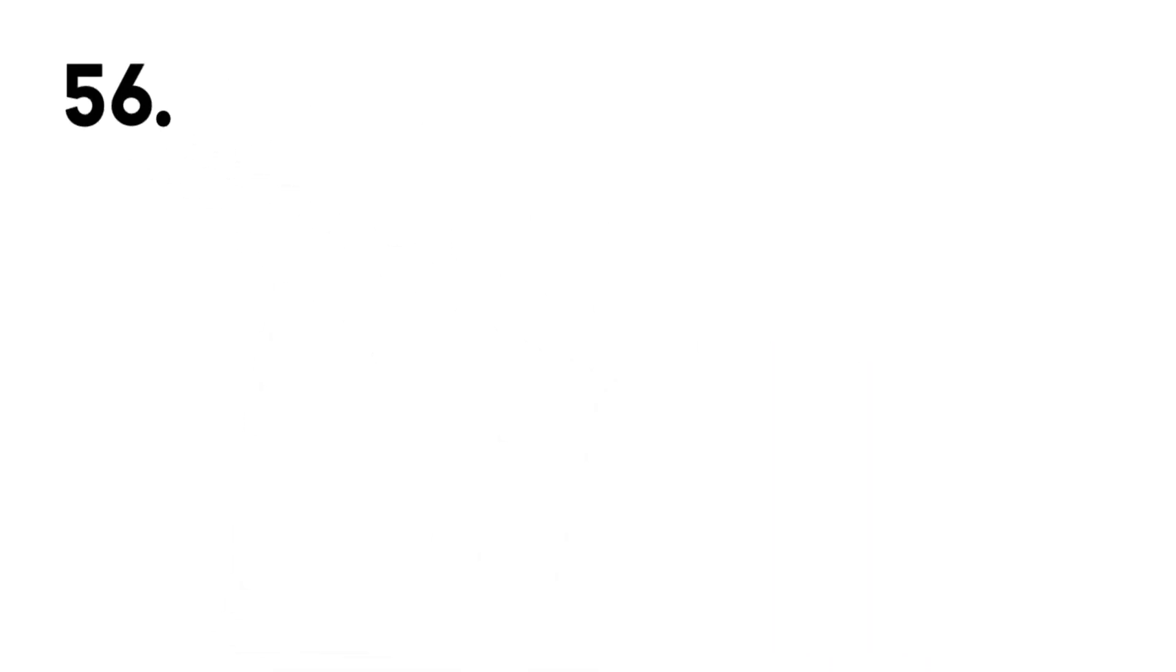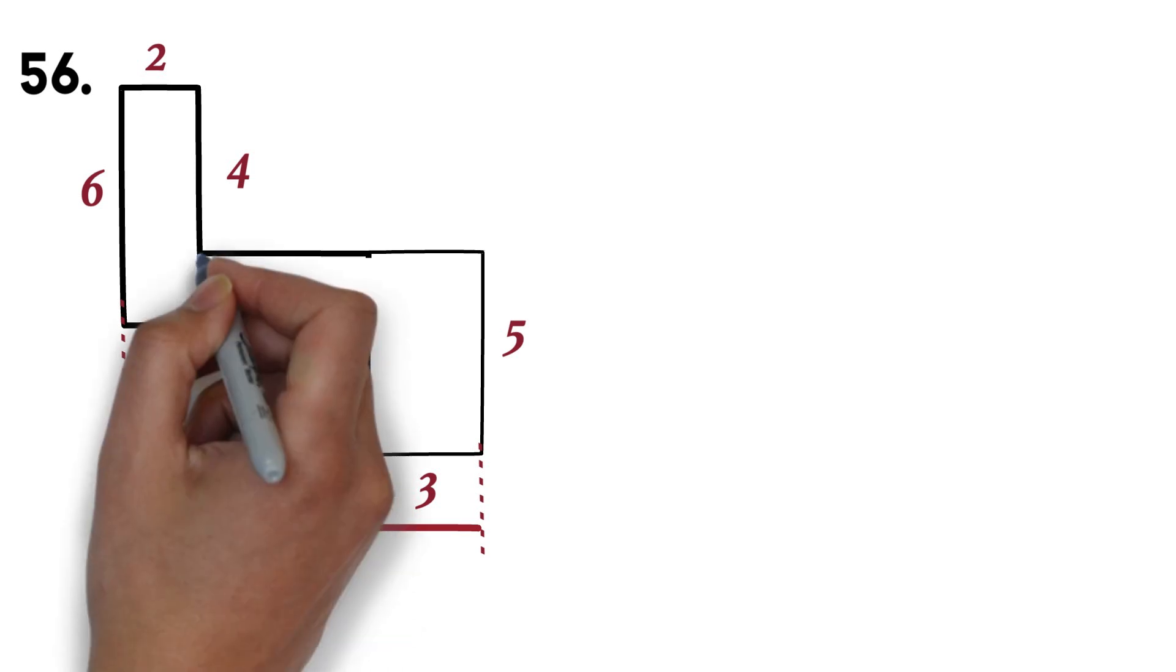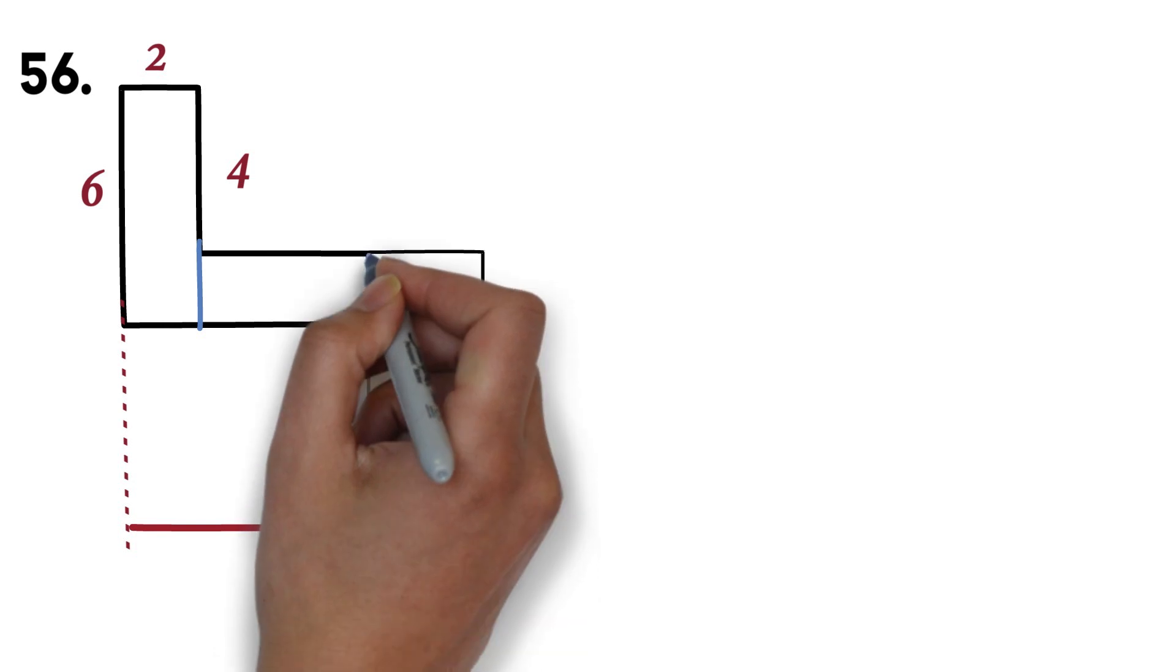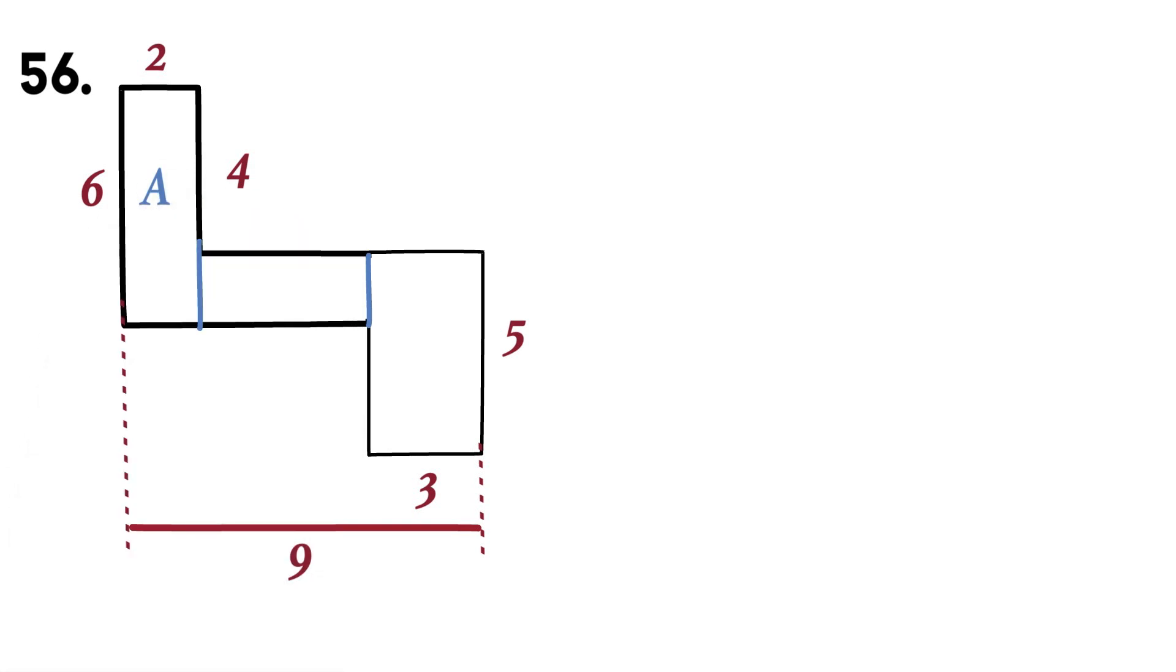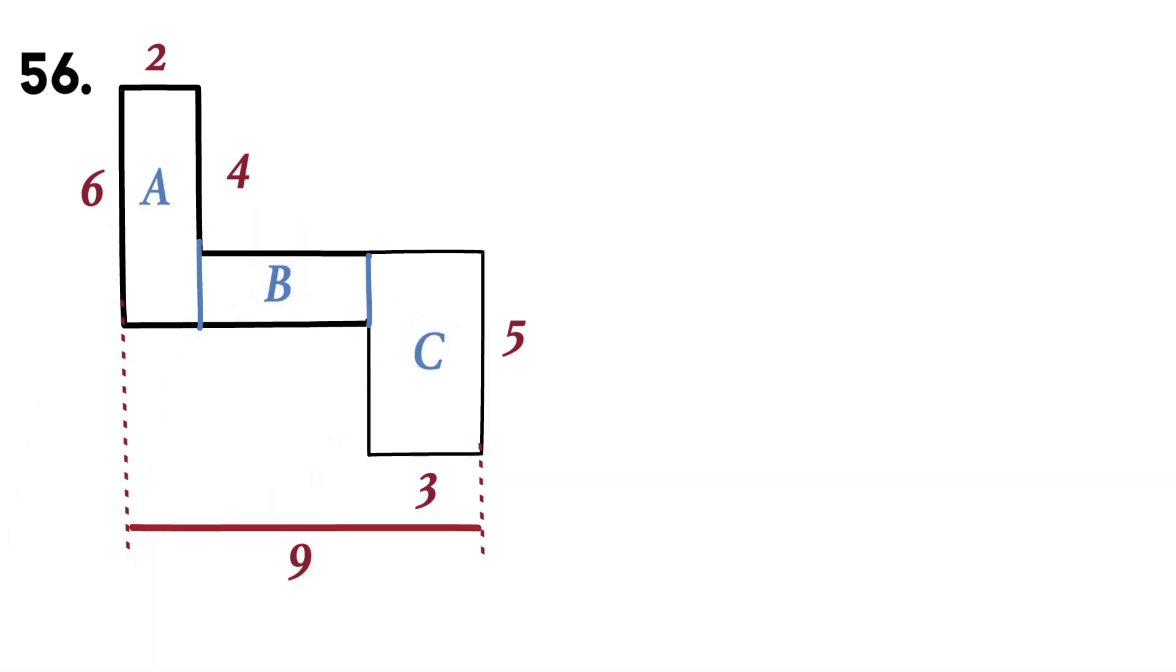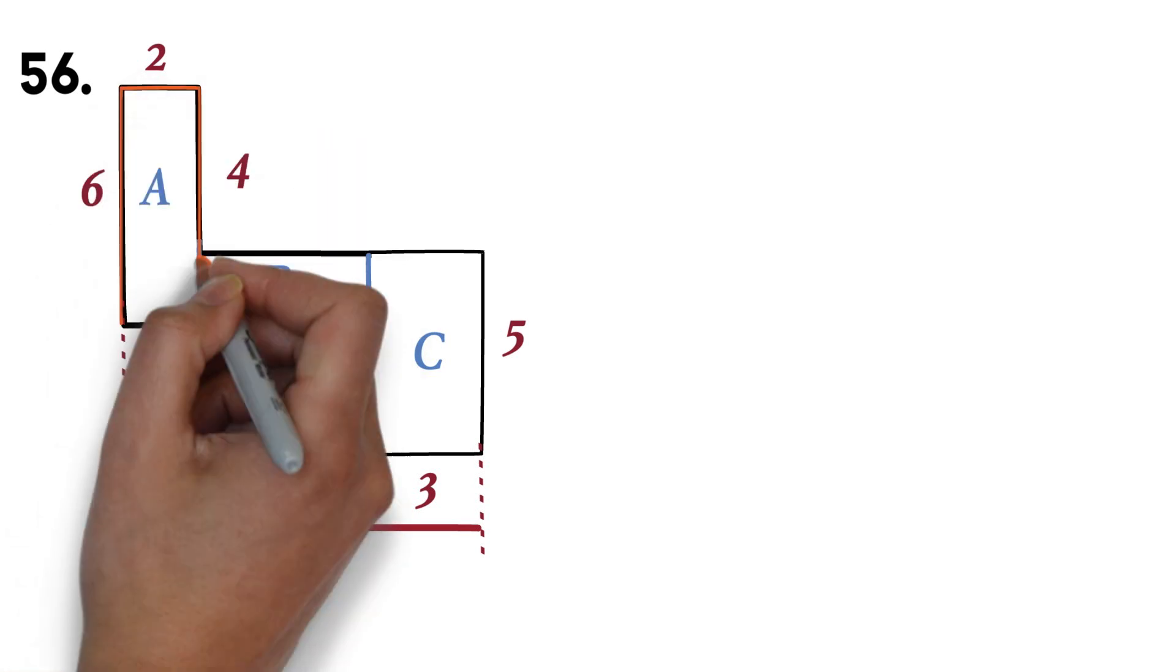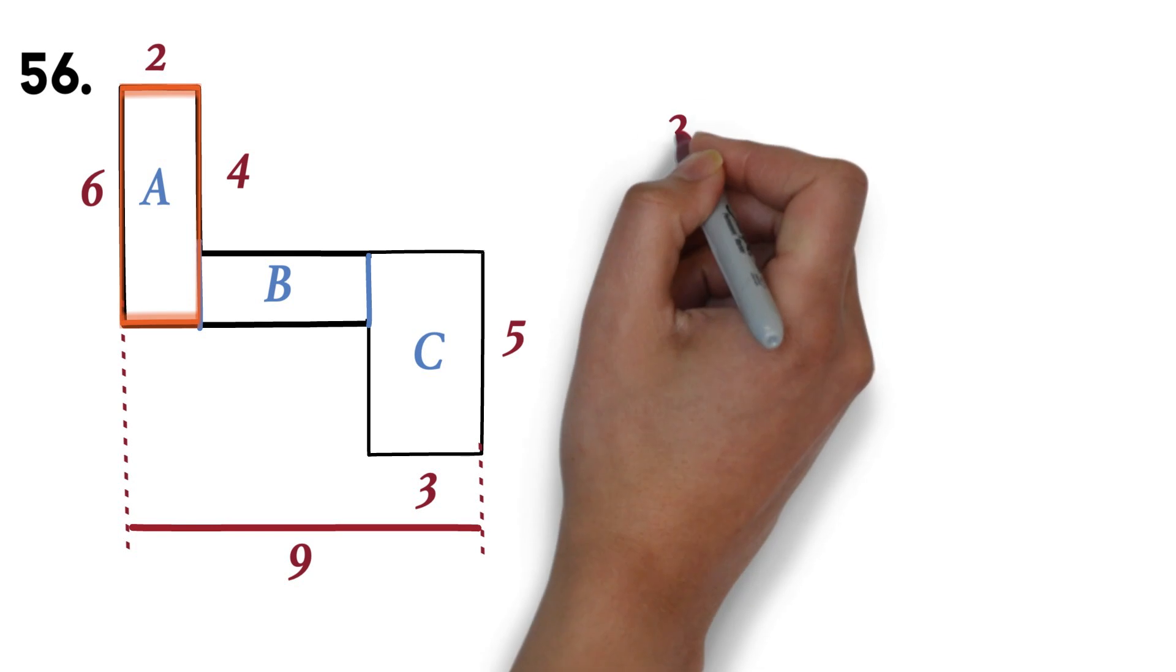Question 56. Here, we are supposed to find the area of the given figure. The work here is to divide the figure into multiple rectangles and find the area of each rectangle, then finally add the areas to get the area of the figure. So I'll draw a line here and also a line here. Let's label this rectangle A, B, and C. To find the area of rectangle A, we have the length of 2 times the width of 6. This will give us 12.